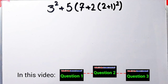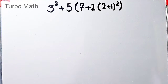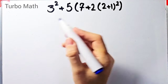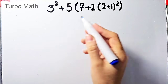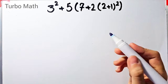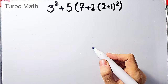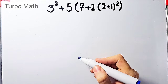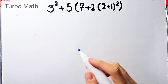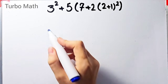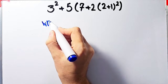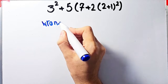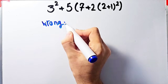Hi friends! In this video we are going to solve three questions about PEMDAS rule. If you are ready, let's get started. The first question is: three to the power of two, plus five, then times open parentheses seven plus two times two plus one, then all of them to the power of two.